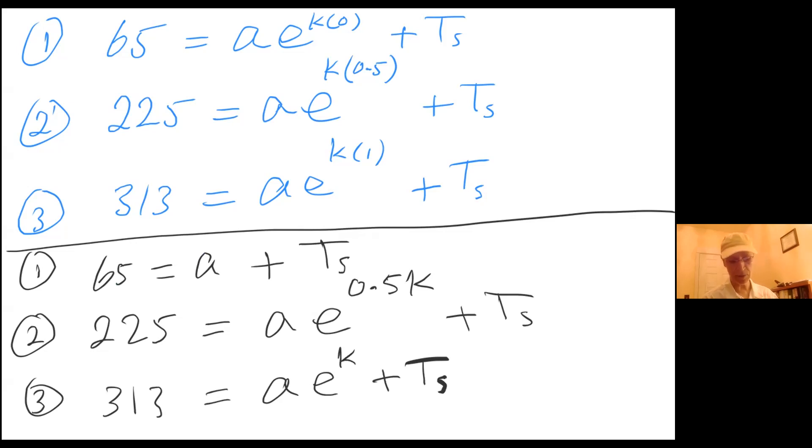So now I'm going to go ahead and go to the next page now that I have my three equations. A good place to start is to subtract equation 2 from equation 3. If I do that, I'm going to have 313 minus 225, which gives me 88. T sub s cancels now.